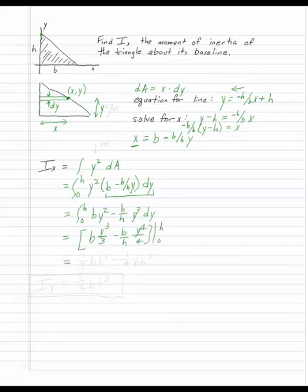Each of these is a bh cubed. This is a third, and this is minus a fourth. A third minus a fourth is a twelfth. So my moment of inertia for a triangle about its own baseline is 1 twelfth bh cubed.